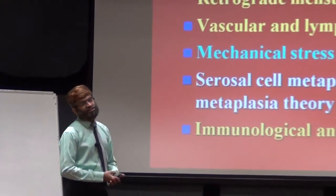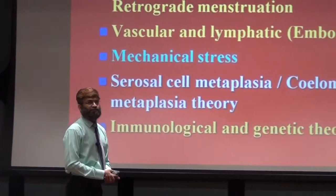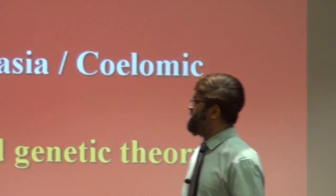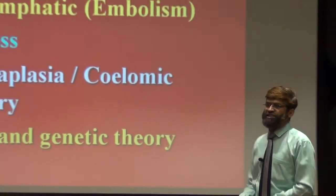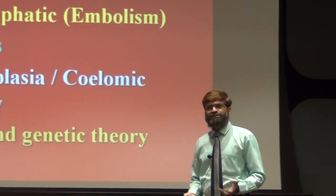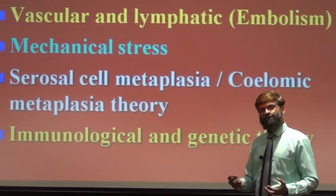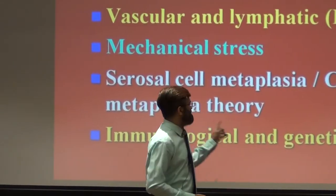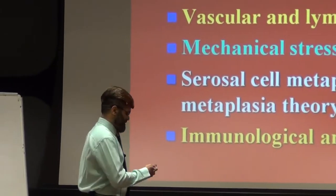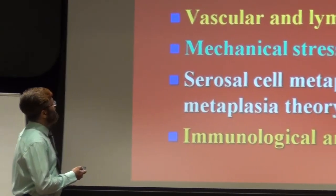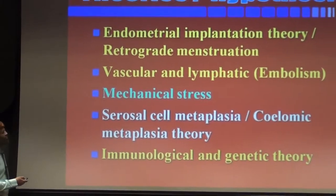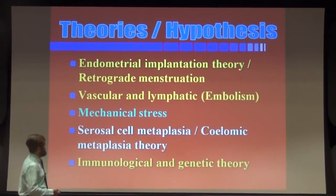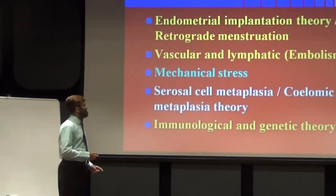The last theory is the immunological and genetic theory. There have been patients who are immunocompromised, and it has been observed that some patients with endometriosis have associated immunological causes. To recap: endometrial implantation theory (retrograde menstruation), vascular and lymphatic embolism theory, mechanical stress, serosal cell metaplasia, and immunological and genetic theory.